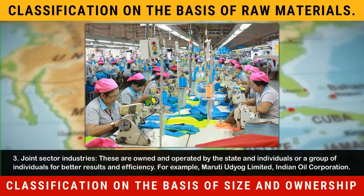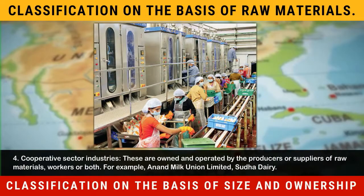4. Co-operative sector industries. These are owned and operated by the producers or suppliers of raw materials, workers or both. For example, Anand Milk Union Limited, Sudha Dairy.